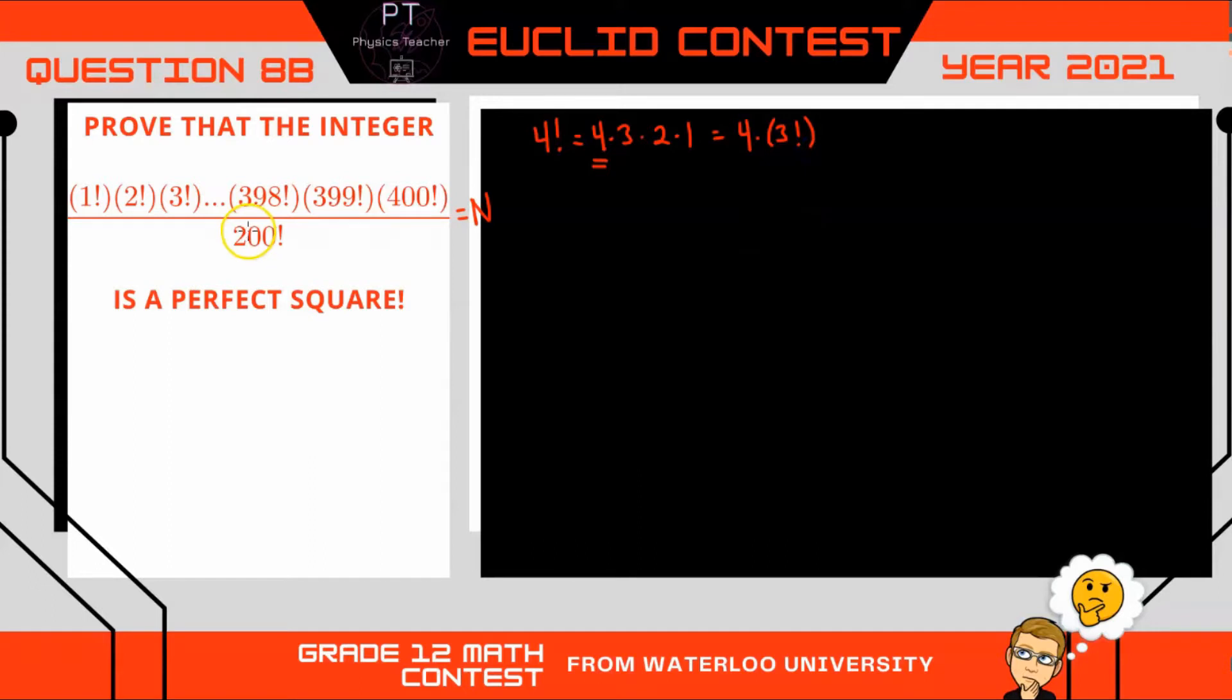So what I'm going to do is do this for every single even factorial. So let's label k. k will be some integer from 1 to 200. And for every 2k factorial, so all the even integers, I'm going to just rewrite it as 2k, that first integer multiplied by 1 less than that, so 2k minus 1 factorial.